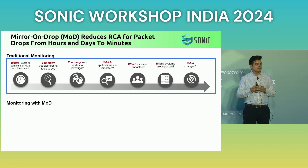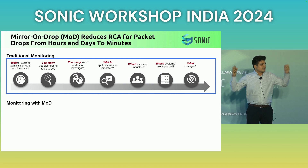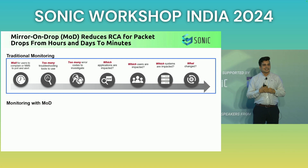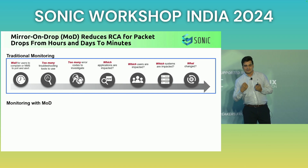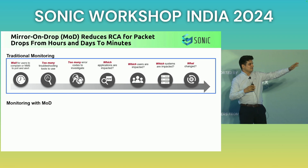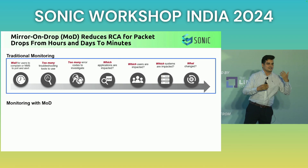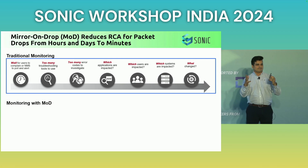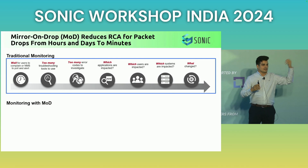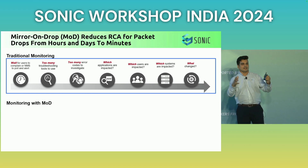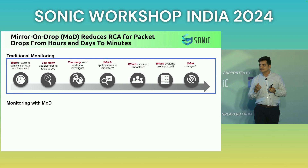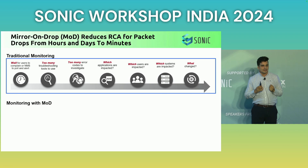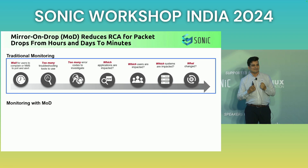A critical incident manager sets up a war room, and you have the network guy, the compute guy, and the storage guy walking in. All this takes 15 to 20 minutes for them to assemble - somebody was having coffee and came running into the war room. All this took 20 minutes, and then the problem disappears. It was intermittent. They sit in the war room for the next two hours thinking the problem will reoccur, but it doesn't.